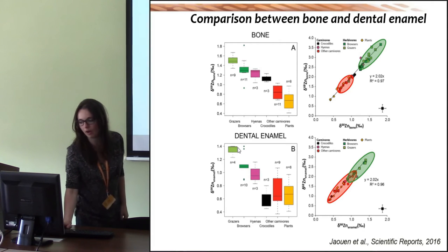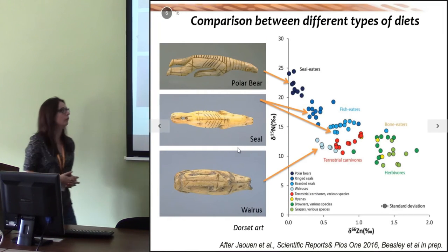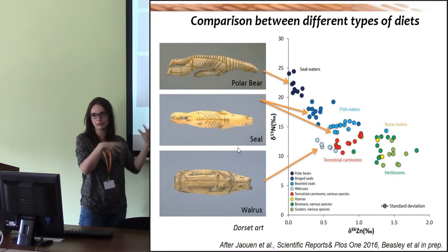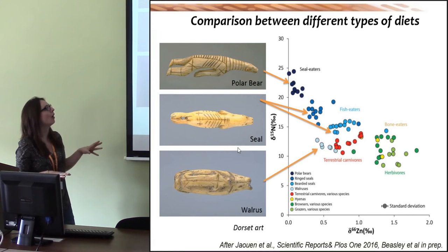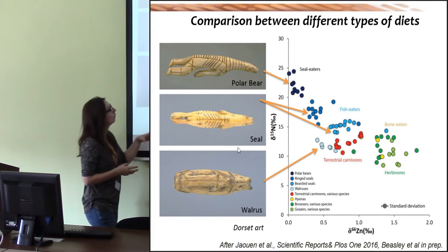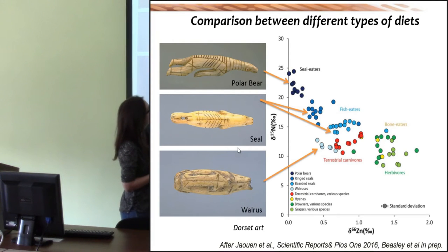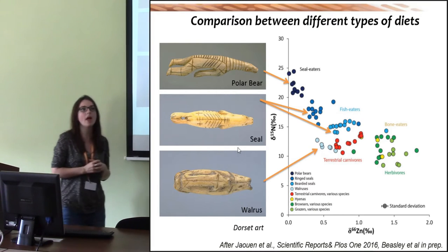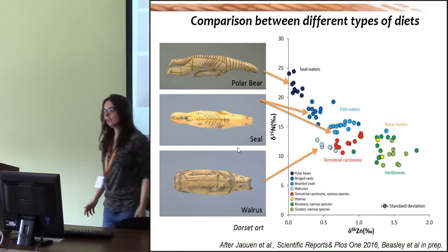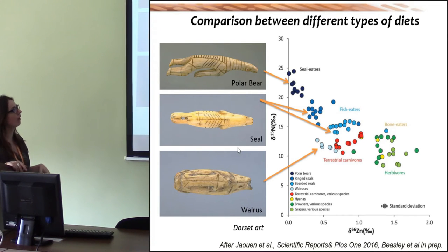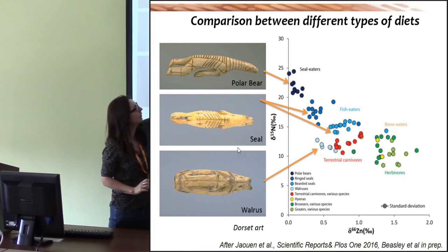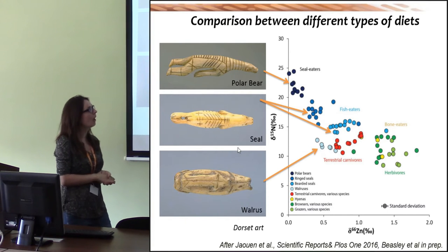We also analyzed marine mammals from the archaeological site of Little Cornary Silas, examining the bones of polar bears, seals, and walruses. We can see the results for both zinc and nitrogen isotopes. There was a trend between nitrogen and zinc isotope composition for these marine mammals, especially for the seals and the filter-feeders.